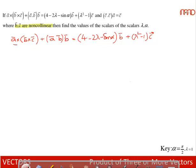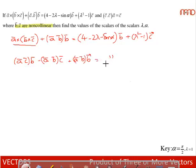Using the definition of vector triple product: (a·c)b̄ − (a·b)c̄ + (a·b)b̄ = (4 − 2λ − sinα)b̄ + (λ² − 1)c̄. It is given that c·c·(c·c)·ā = c̄.